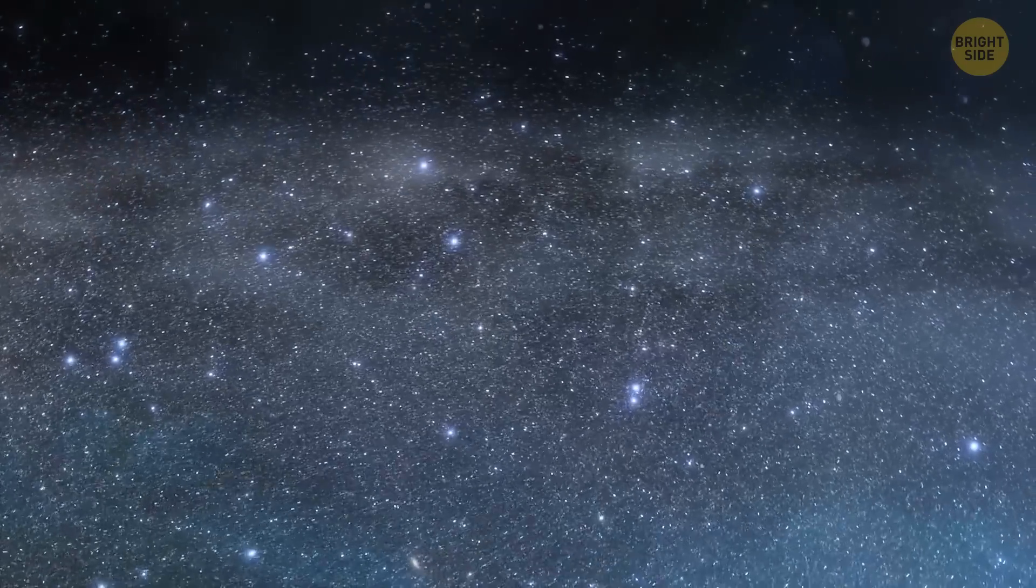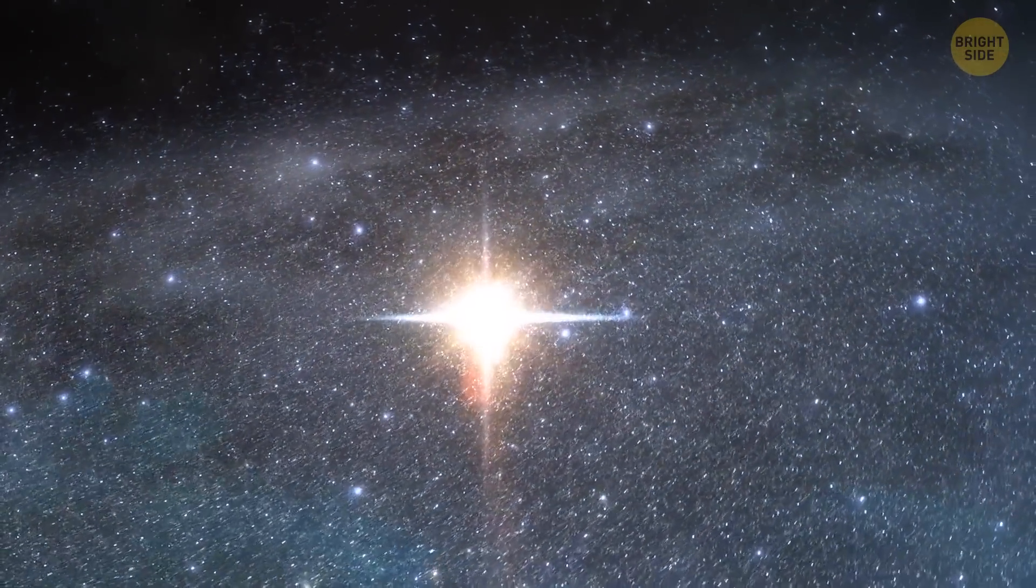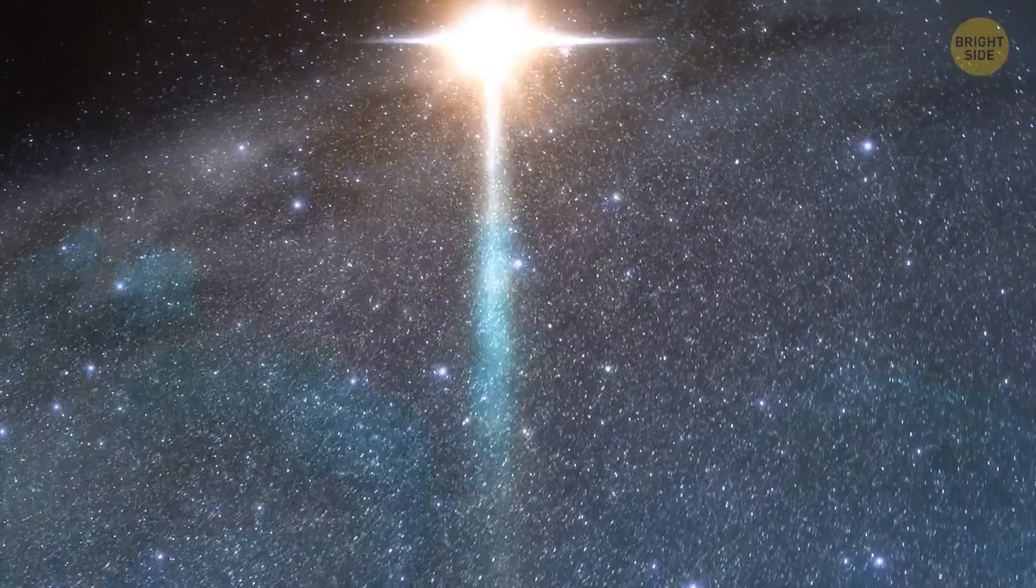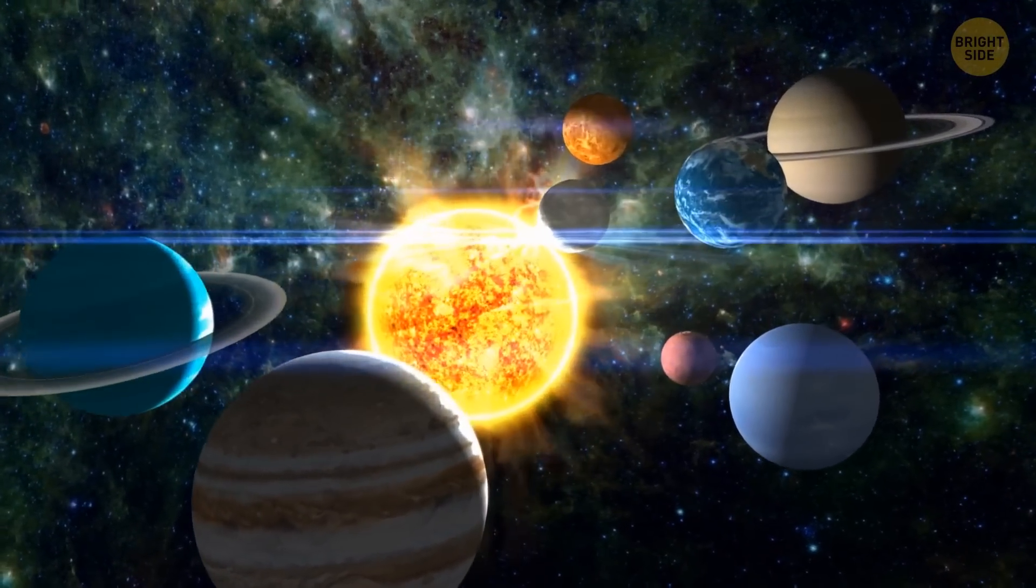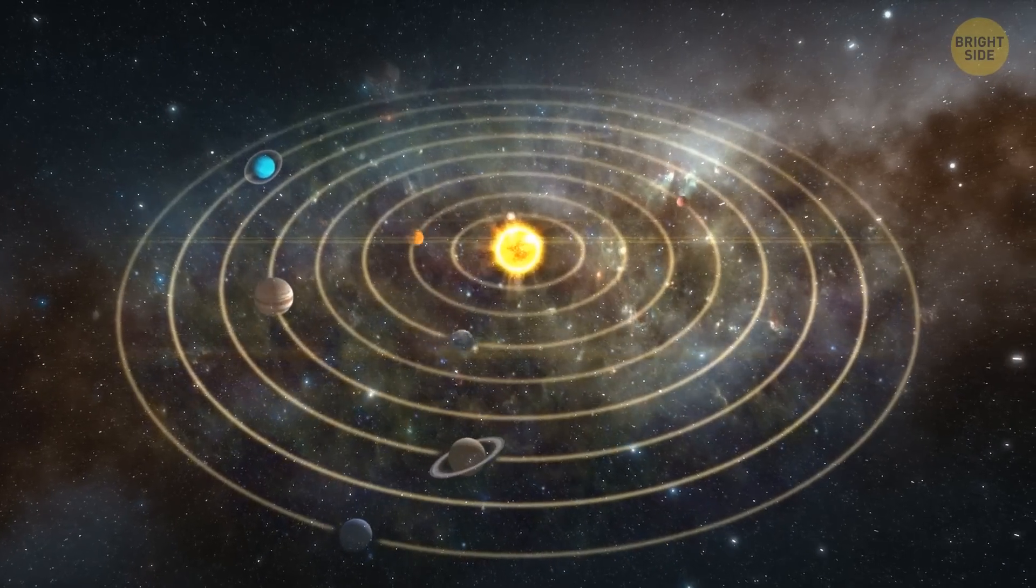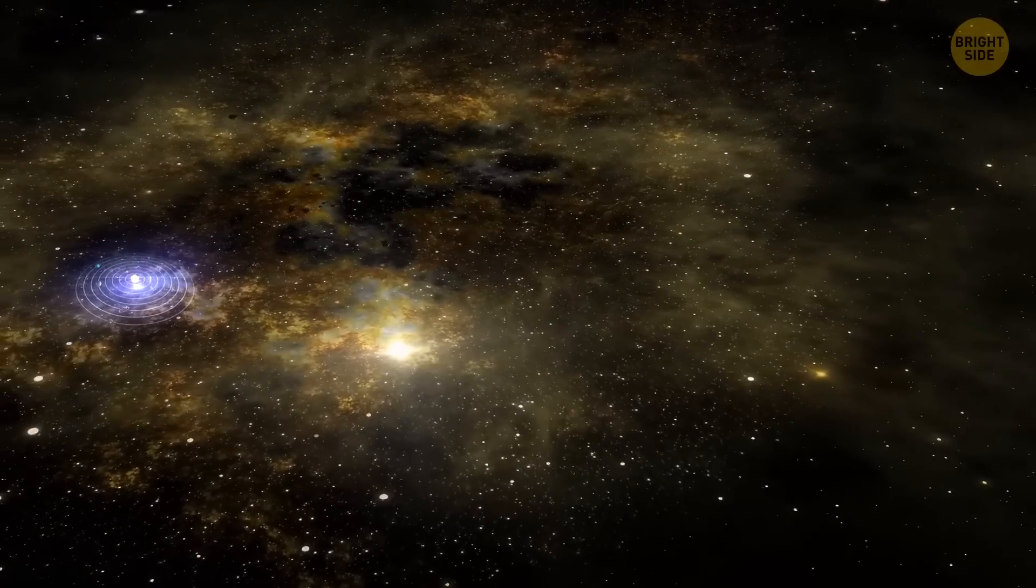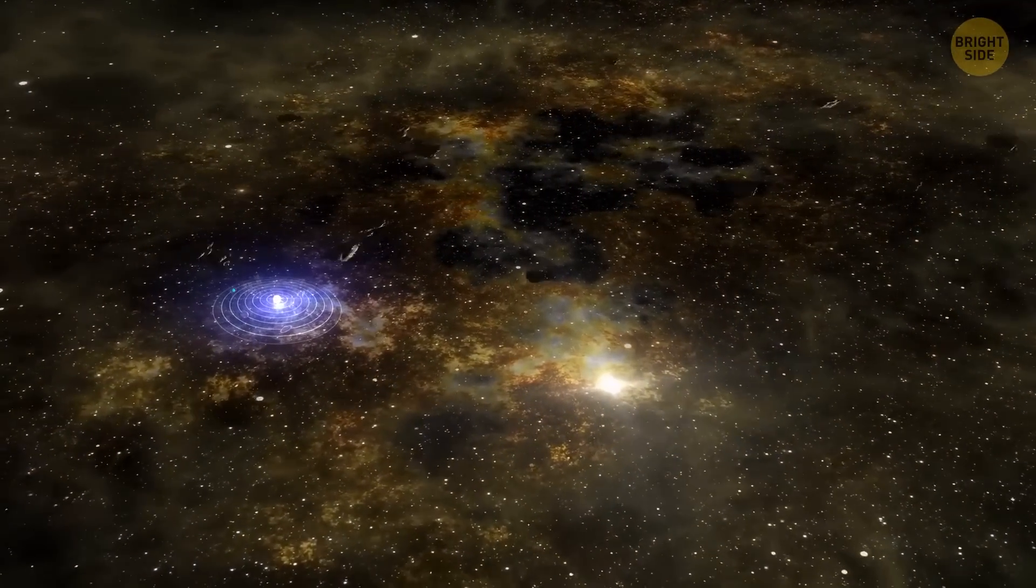The spiral arms are the areas where new stars are born. It's where the most stars, gas, and dust are concentrated. And this is where the solar system is located. Our system is like a tiny speck in the grand cosmic tapestry of the Milky Way. It's about 26,000 light-years away from the center of the galaxy. A pretty long distance, isn't it?